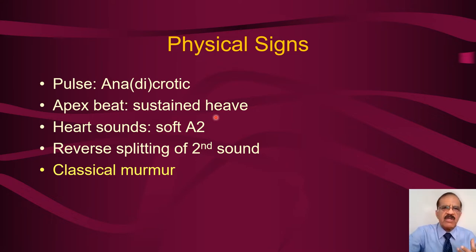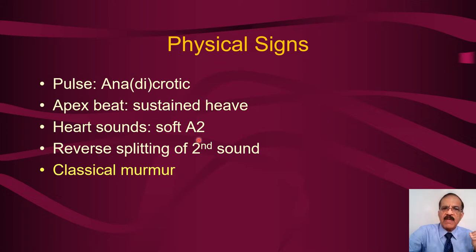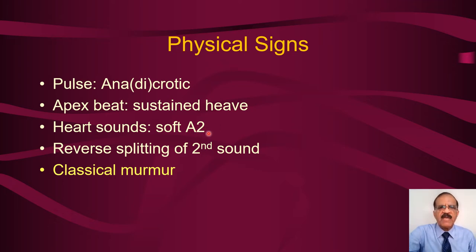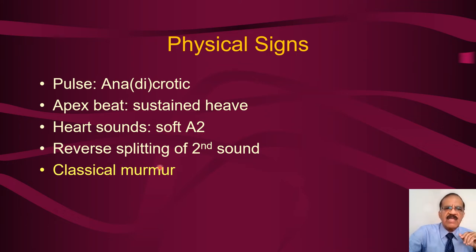In heart sounds, the aortic component of the second sound would be soft. The easy way to remember: the aortic component is produced by the closure of the aortic valve, and since the valve is diseased its closure is not normal, so the second sound is soft. There is also reverse splitting of the second sound — my next slide will explain what I mean. But one thing easy to pick up, and the cardinal sign of aortic stenosis, is the classical murmur.